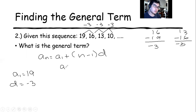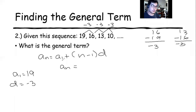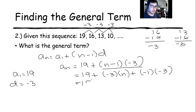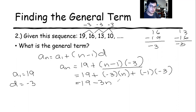We're going to substitute the given into this formula. Our a sub 1 is 19. We're going to do the same thing as in the first example — multiplication using the distributive method. Negative 3 times n is minus 3n. Then negative times negative is positive, so plus 3.